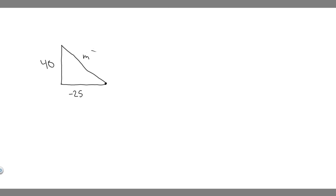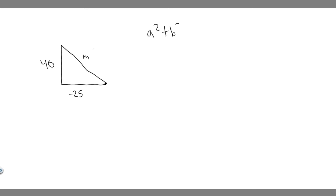How do we find the hypotenuse of a triangle given two different sides? We use the Pythagorean theorem: a squared plus b squared equals c squared. This is the formula you can use if given a and b, which are basically the x and y components. So a and b are the components, and c is essentially the hypotenuse. If we have a and b, c is the only variable left, so we can solve for it.